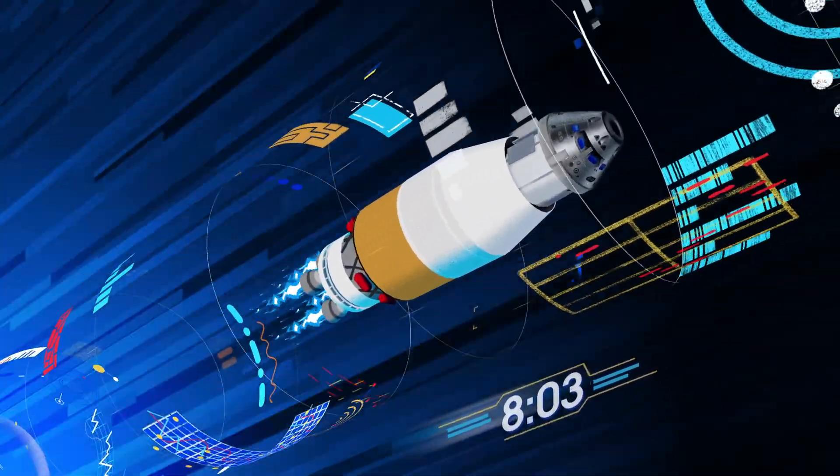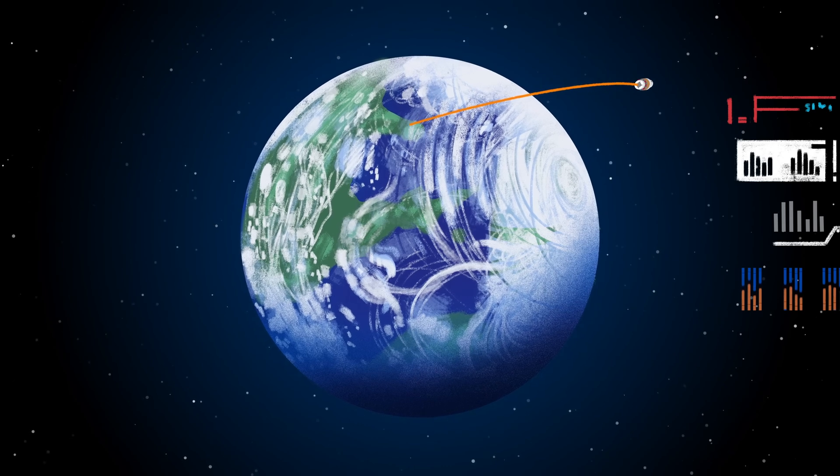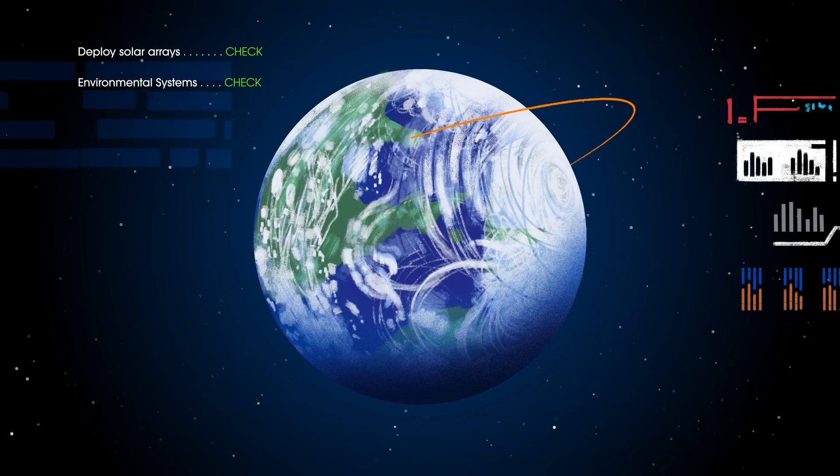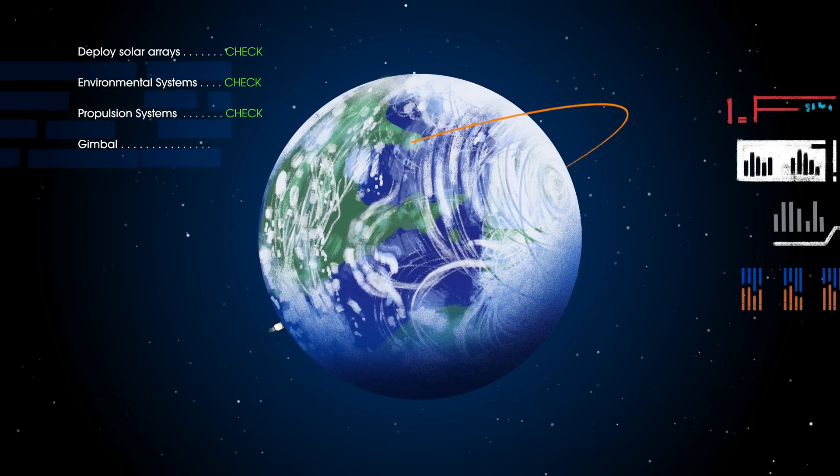The upper stage fires briefly, placing Orion into a parking orbit around the Earth. Here, the crew reconfigure the spacecraft and check systems to confirm everything is ready for deep space travel.